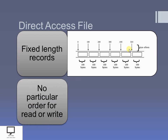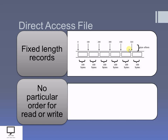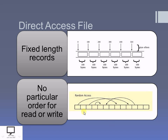Unlike the sequential file or index sequential file where order is important and data can only be accessed in sequence, the direct access file does not follow any order to perform any operation. Suppose this is a direct access file — if I access the first record, the next record accessed can be at any particular position, so there is no sequence or order. After that, suppose I access a particular record, and after that I may access a record at a completely different position. In this way, I can access any record randomly, which is why this file type is called random access file or direct access file.